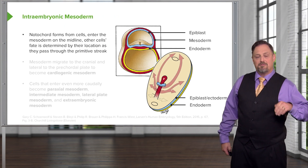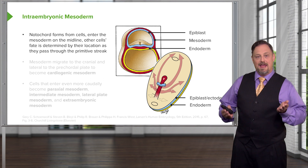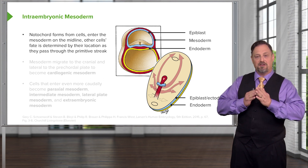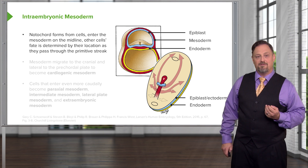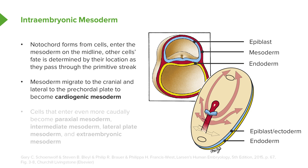As mesoderm is forming and ectoderm is pulling itself between the two layers, we're going to get thickening and subdivision of the different regions of the mesoderm. The portion that migrates alongside the notochord — not on the exact midline but just a little bit lateral to it — will flank the oropharyngeal membrane. This is the cardiogenic mesoderm, and as the name implies, it will be the mesoderm that helps form the early heart.